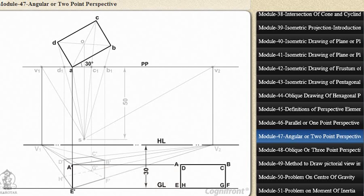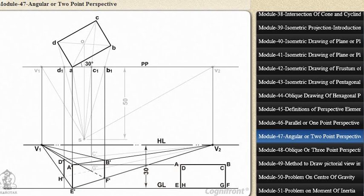Draw lines joining A' and E' with V1 and V2. Through B1, draw a vertical line to intersect A'V2 at B' and E'V2 at F'. Similarly, draw a vertical through D1 to obtain points D' and H'.